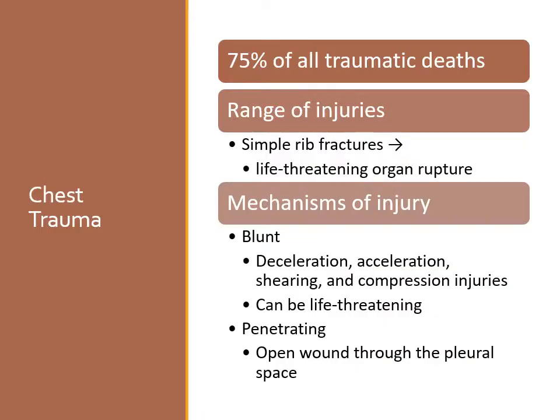Blunt trauma occurs when the chest strikes or is struck by an object. The impact can cause shearing and compress the thoracic structures. The external injury may appear minor, but internally the organs may have severe injuries. Rib and sternal fractures can lacerate lung tissue. In high-velocity impacts, shearing forces can result in lacerations or tearing of the aorta. Compression of the chest may result in contusion, crush injury, and organ rupture.